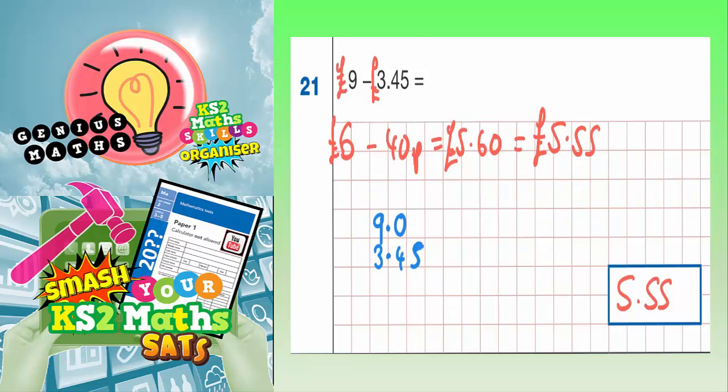But we've got an extra column here that's got nothing in it. So we could do with putting an extra 0 in there to fill in the empty column. So we're talking about 9.00 take away 3.45. Now, hopefully, if we've done this bit right and done it with the money method, we should get the same answer when we do our column method. So let's have a look.